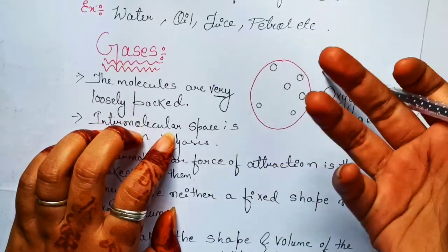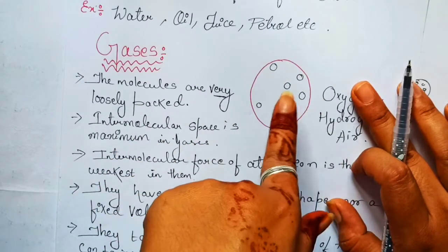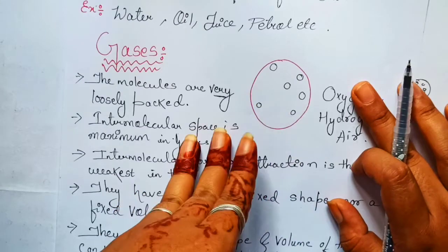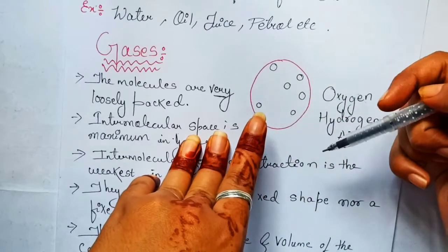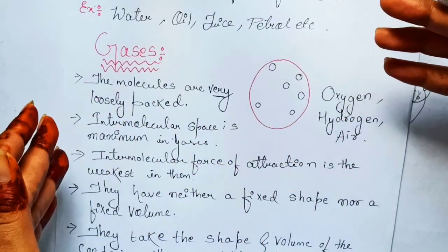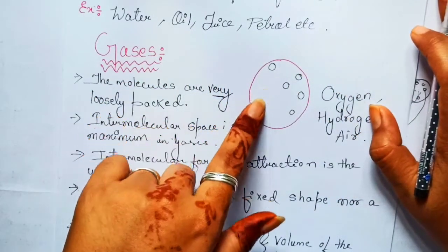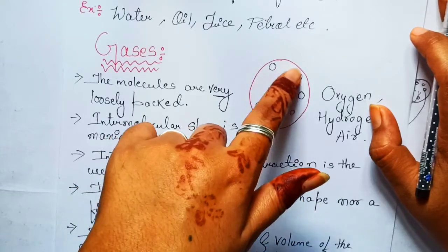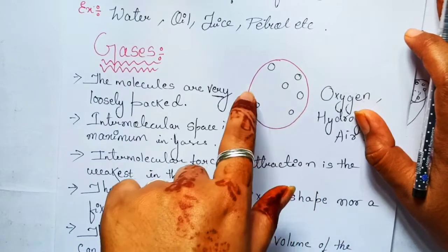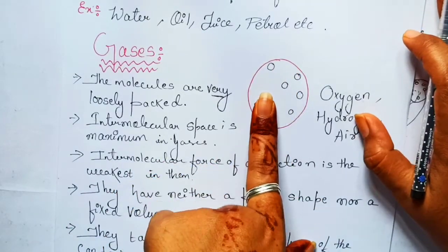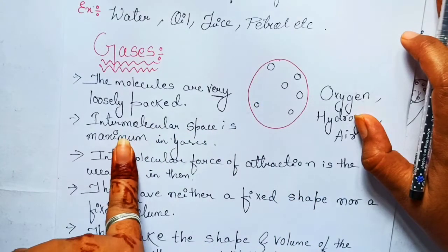In gases, as it is one of the states of matter, there are also molecules and atoms present. In gases, molecules are very far away from each other. Because they are so far apart, there is very large space between them — what we call intermolecular space. The intermolecular space in gas is maximum.